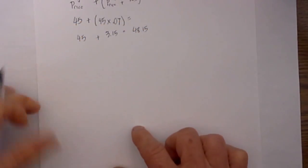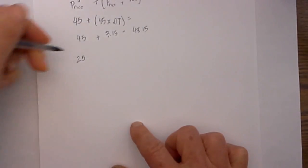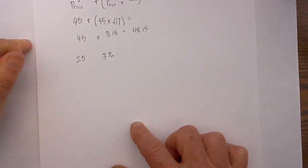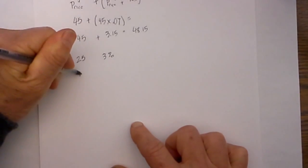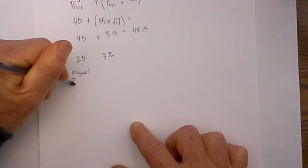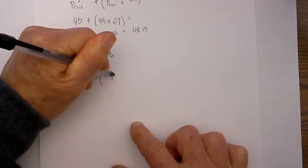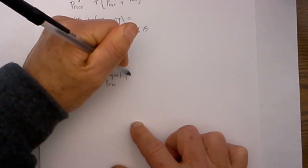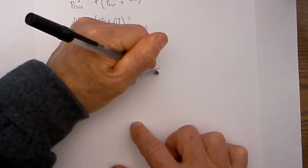We have a price of $25. We have a sales tax of 3%. I will use the formula for the original price plus the sales tax equals the final price.